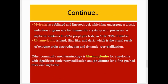The second type is mylonite, which is a foliated and lineated rock that has undergone a drastic reduction in grain size by dominantly crystal plastic processes. Mylonite contains 10 to 50 percent porphyroclasts and 50 to 90 percent groundmass or matrix. Ultra-mylonite is flint-like and dark, which is the visual result of extreme grain size reduction and dynamic recrystallization.